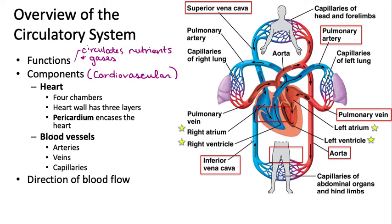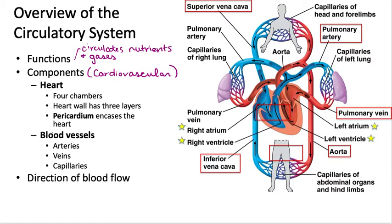In humans, we have a closed circulatory system with a four-chambered heart, called double circulation because we have one set of blood vessels that goes to and from the lungs and one set that goes to and from the rest of the body. The heart is the muscle that pumps blood and is made up of cardiac muscle. There are muscle layers including the endocardium — the innermost muscle layer — and the myocardium. A myocardial infarction would be a heart attack. The pericardium is a tissue layer, not muscle, that encases the outer surface of the heart.